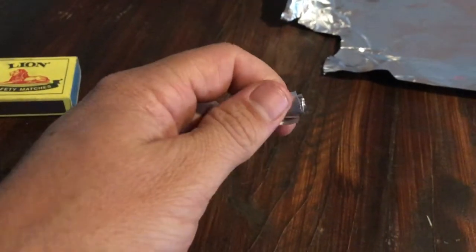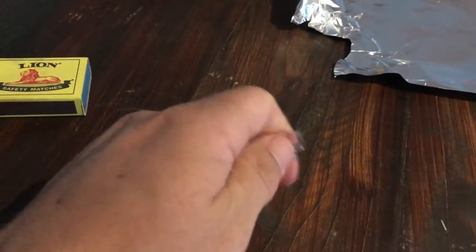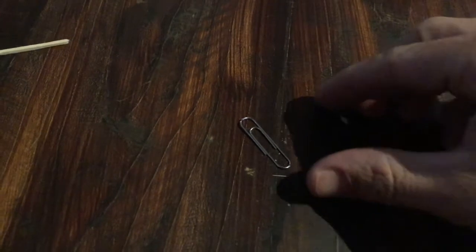So here we are rolling it up. Now we're going to turn the front into a pointy bit like a rocket. Next we're going to take our paper clip and we're going to turn it into a launch pad.